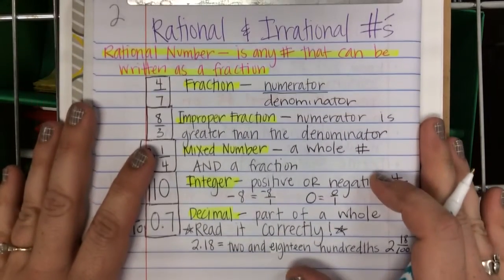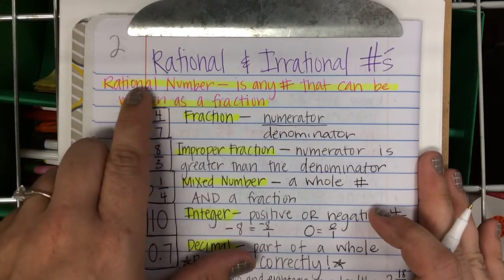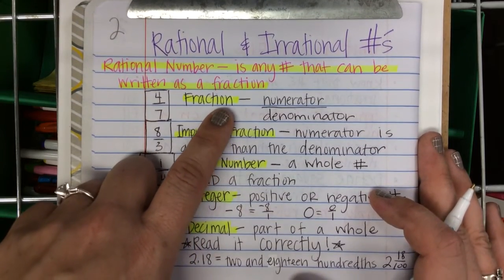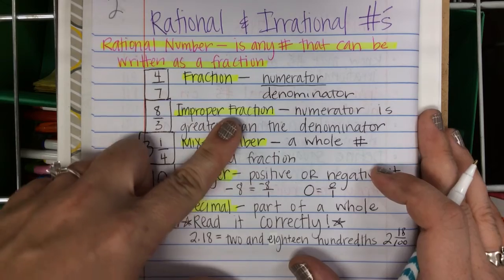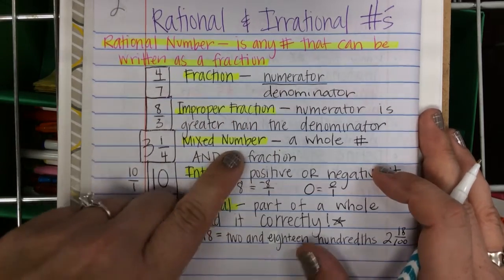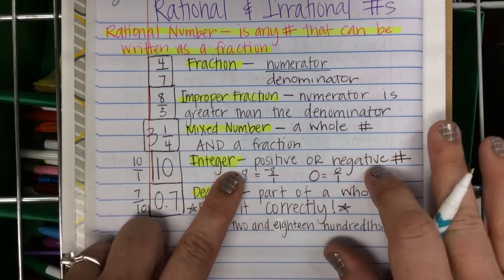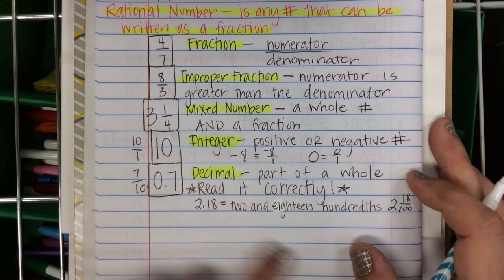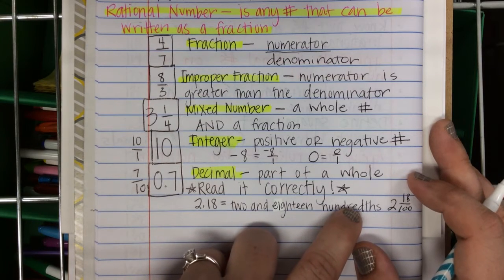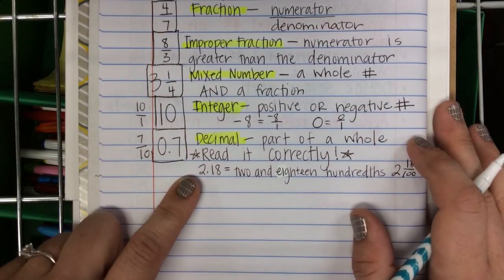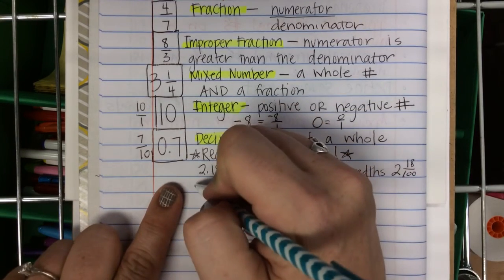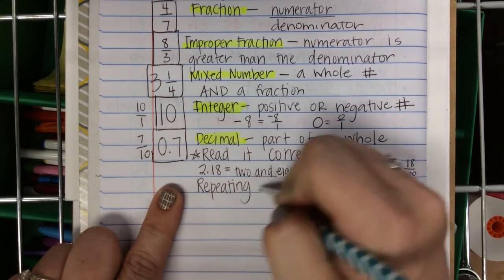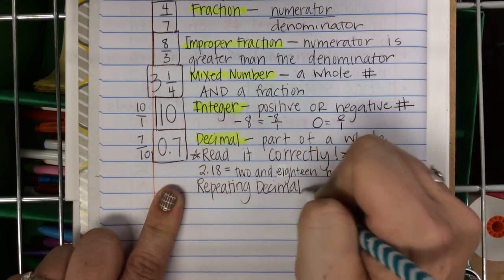So far we've covered a lot. Rational numbers can be anything written as a fraction — that includes fractions, improper fractions, mixed numbers, integers (positive or negative numbers), and decimals. Just read them correctly. It also includes some special decimals: repeating decimals.